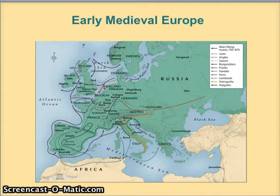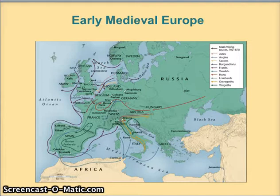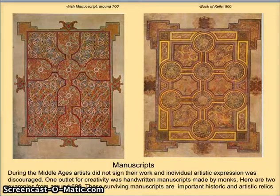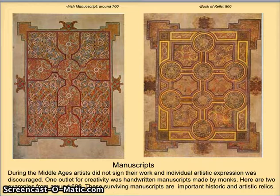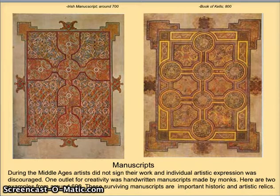As we consider the art of this period, we'll look primarily at the art that was created in monasteries, because the monasteries were the seats of learning and of artistic pursuits. Much of this art was done with no credit to the artist, but really credit to the divine impulse. One of the main sources of art is in manuscripts, which can also be called illuminated manuscripts. During the Middle Ages, artists did not sign their work, and individual artistic expression was discouraged. Instead, one outlet for creativity was in these handwritten manuscripts made by monks.